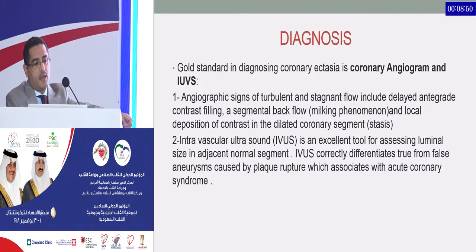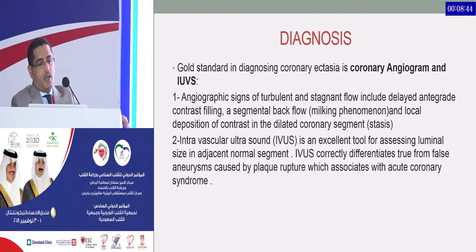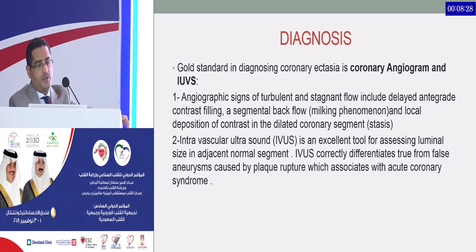The gold standard for diagnosis of coronary ectasia is coronary angiogram and IVUS. Angiographic signs include turbulent and stagnant flow, delayed and degraded contrast filling, segmental backflow, milking phenomenon, and local deposition and stasis. IVUS is an excellent tool to assess luminal size in adjacent normal segments, and can correctly differentiate true from false aneurysm caused by plaque rupture, which is associated with acute coronary syndrome.